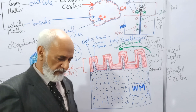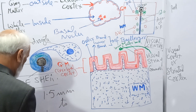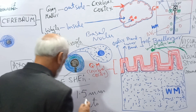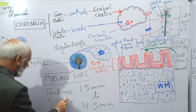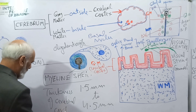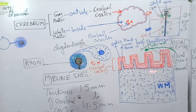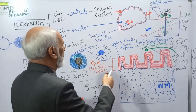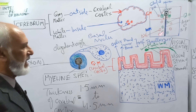The thickness of the cerebral cortex varies from 1.5 mm to 4.5 mm. In different parts, thickness differs — in some areas it is 1.5 mm and in other areas it is 4.5 mm. Deep to the cerebral cortex is the white matter, which contains myelinated nerve fibers supported by glial cells and blood vessels.